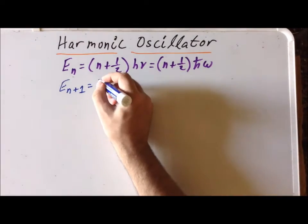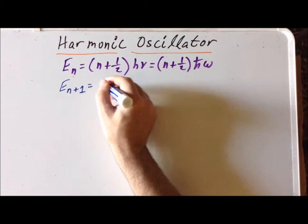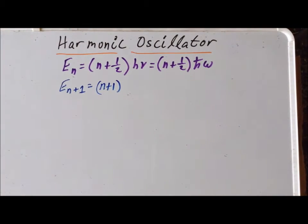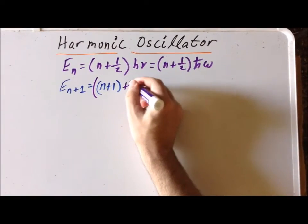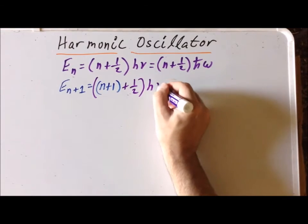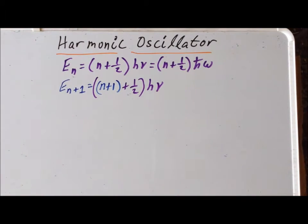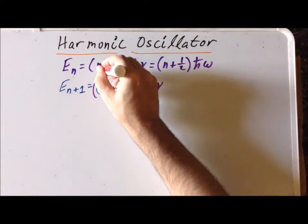What we do is we simply replace n by n plus one anywhere we see it in the expression. Let's replace n by n plus one. Now write that in blue and write the rest of our expression exactly as we did before in purple to show which parts we changed and which parts we didn't change. We're going to write it in terms of h nu, but you can similarly do it in terms of h-bar omega if you like.